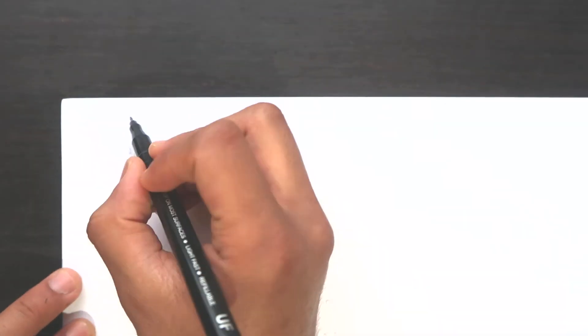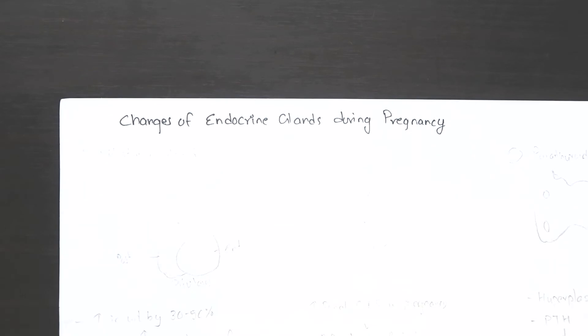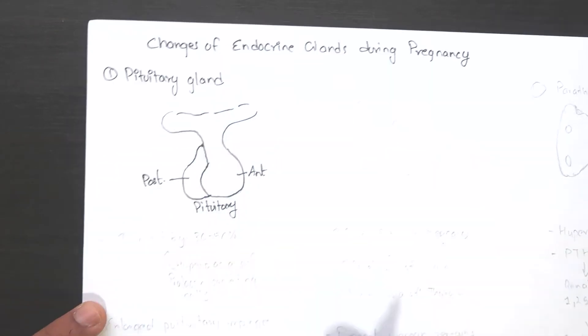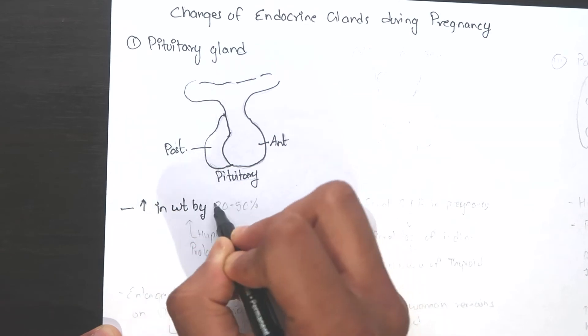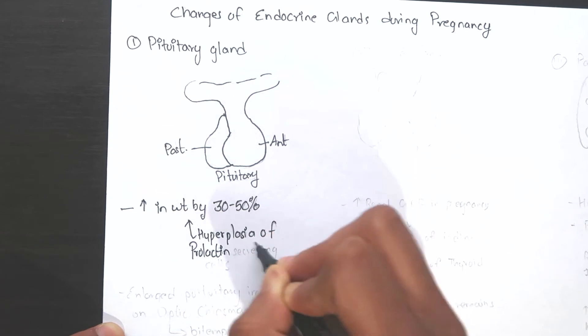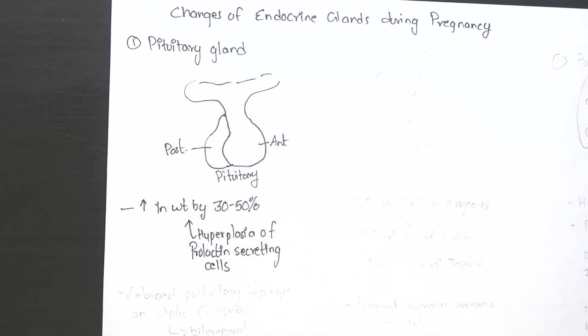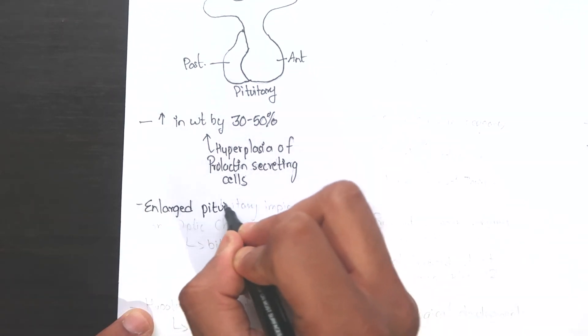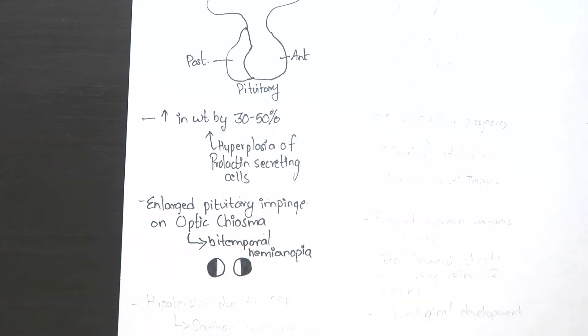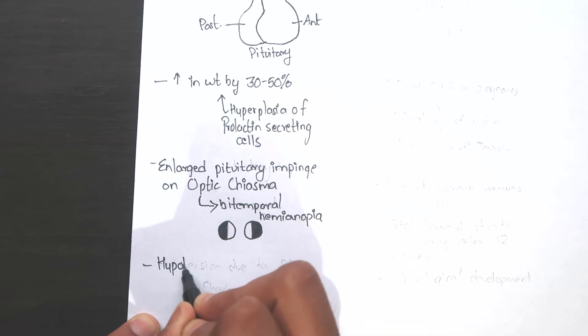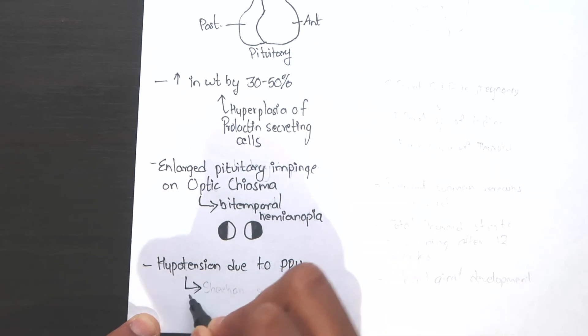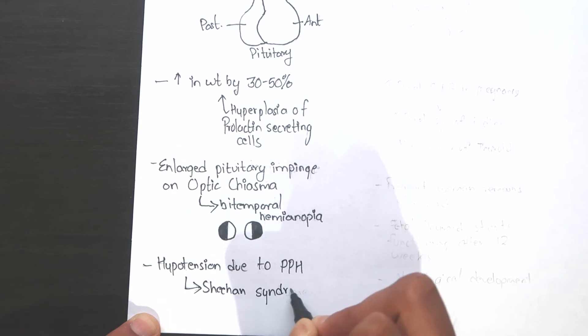Let's look at the changes of endocrine glands during pregnancy. First, on the pituitary gland. There is increase in weight by 30-50% and the gland is enlarged to about twice its normal size. This is principally due to hyperplasia of acidophilic prolactin secreting cells. Sometimes, the pituitary enlargement may impinge on the optic chiasma causing bitemporal hemianopia. The pituitary gland during pregnancy becomes more susceptible to alterations in blood supply. Sudden hypotension following postpartum hemorrhage may cause infarction of the gland, commonly known as Sheehan syndrome.